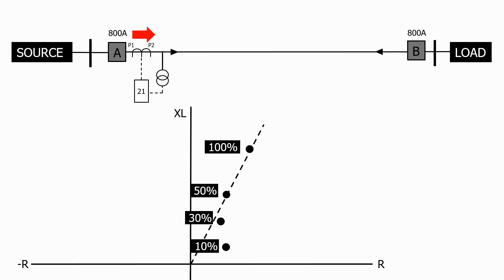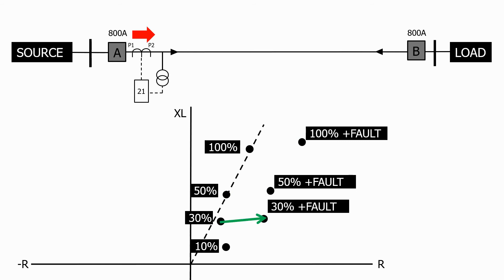We also need to consider the impedance of the fault. When we're at the far end of the line, the impedance of the fault can be substantial, as the current needs to flow for a long distance back to the source. As we get closer to the source, the fault impedance normally reduces.